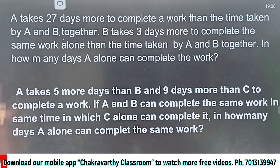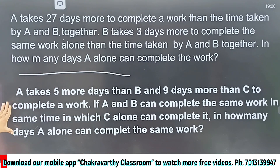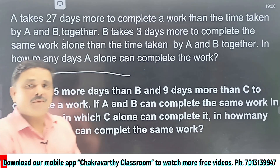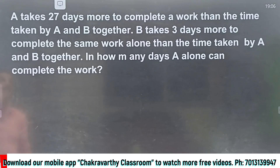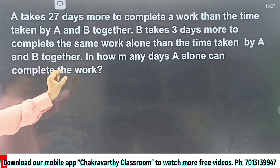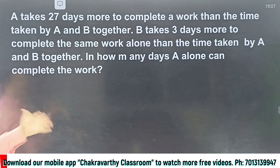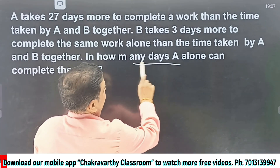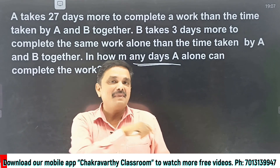These two are very simple questions. The first question is here and the second one is here. Please make a note of that or simply take a screenshot and try to do it by yourself. After that I'll explain you in the simplest way. First, let's take the first question. A takes 27 days more to complete a work than the time taken by A and B together. While reading this, it seems the question is very difficult because of the way it is framed.